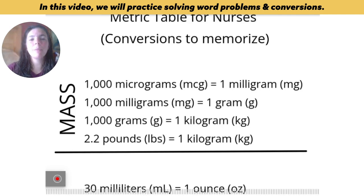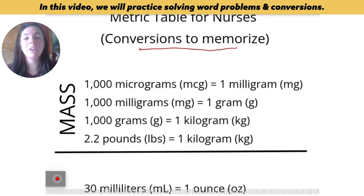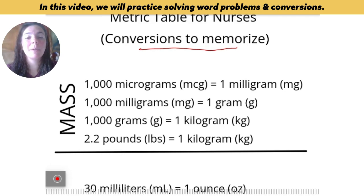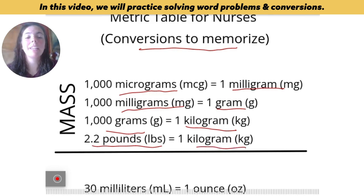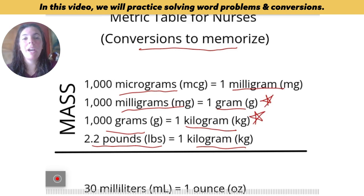This metric table for nurses is one you want to memorize. There will be a mnemonic I'll show you in a few minutes that will be really helpful, but overall if you can memorize these conversions you will be in a really good place for your TEAS 7 exam. For mass: 1000 micrograms equals one milligram, 1000 milligrams equals one gram, 1000 grams equals one kilogram. Notice how 1000 of the smaller unit equals the larger unit. Also memorize that 2.2 pounds equals one kilogram.